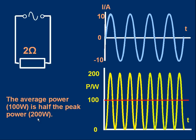That's a consequence of the shape of the curve — a sine curve. For a non-sinusoidal waveform, for example if you start with a non-sinusoidal current, the average power could well not be half the peak power. But in this case it is.